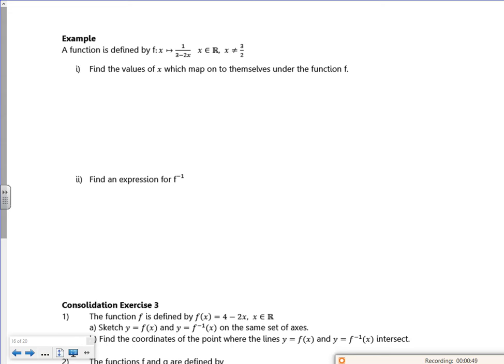Right then. So if it's mapping onto themselves, that means it's staying the same. So I want y equals x. I could put x equals y. So y equals x, that's what I want, because that's how it maps onto itself. It's a bit random this question really.